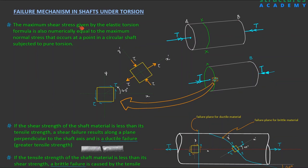An important point to note: the maximum shear stress given by the elastic torsion formula is also numerically equal to the maximum normal stress that occurs at a point in a circular shaft subjected to pure torsion. If we consider a point on a shaft under pure shear and rotate the reference axis by 45 degrees at that very point, the maximum normal stresses that occur are numerically equal to the shear stresses given by the elastic torsion formula.